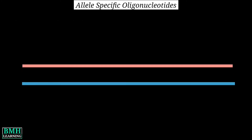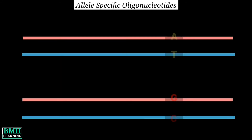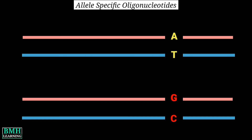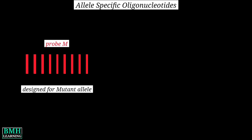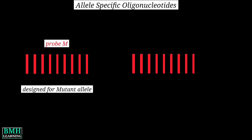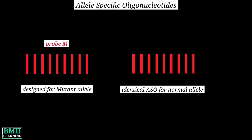Let me explain this diagrammatically. As we know, alleles are alternate forms of a gene. When a mutation occurs, it gives rise to two different alleles for a gene — one type is wild or normal, and another one is mutant. The allele specific oligonucleotide has the ability to detect a specific allele. In this example, the wild type has A and T bases, and the mutant form has G and C. It is designed to be specific for only one version or allele, so let's say we are specifically designing it for the mutant form — let's name it probe M — and as a control, another ASO would be synthesized for the normal sequence, named W for wild form.